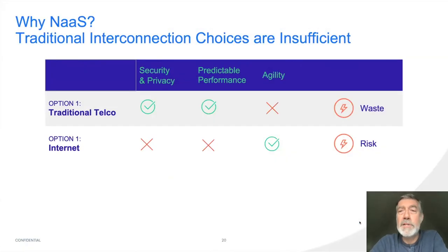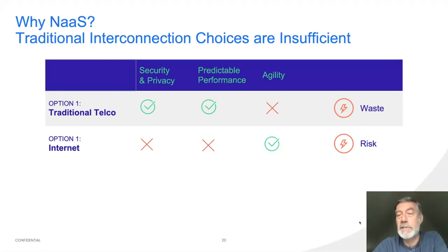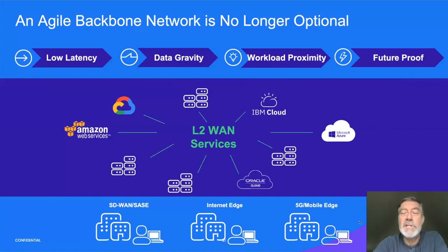The reason why network as a service came along — essentially SDN applied to the network itself working as a cloud service — is because of insufficiencies in traditional interconnection choices. With a traditional telco, because there was no agility, you essentially had to over-provision, which could lead to waste. On the internet, you had the problem I illustrated with predictability and performance, and of course security issues if the route changes to an undesirable network. But it's not just for your cloud that you need this sort of agility — as your network transforms, your backbone is going to change too.